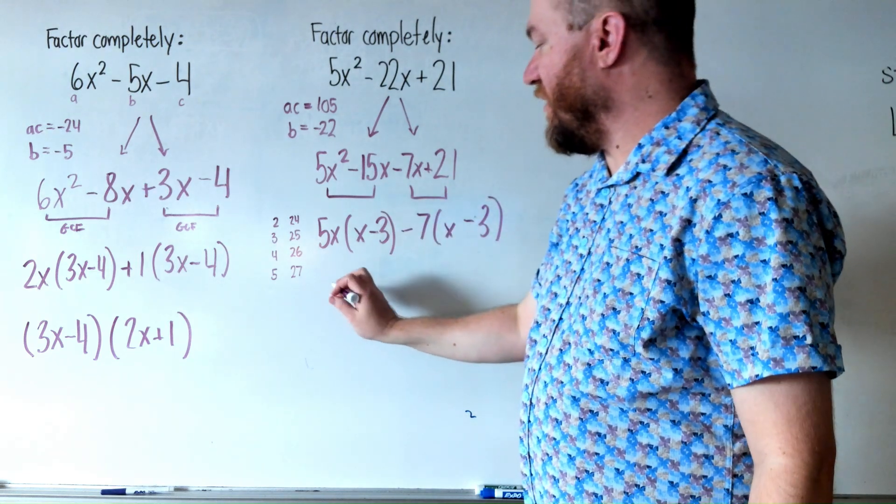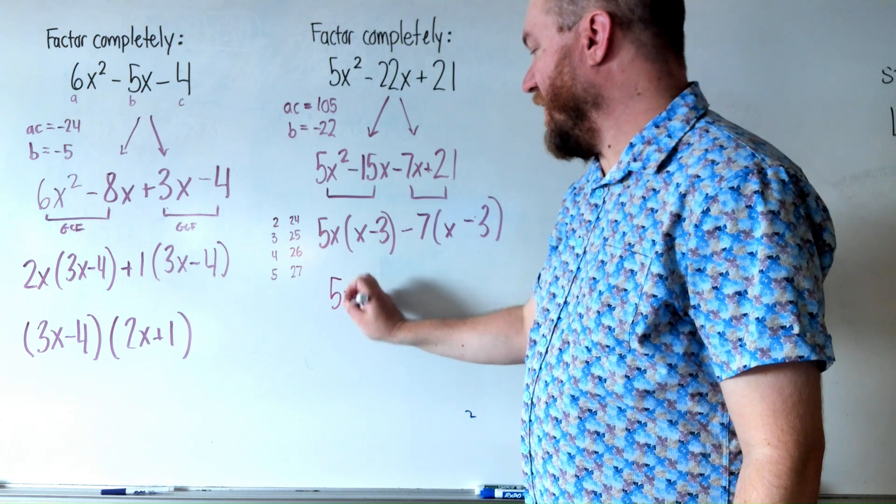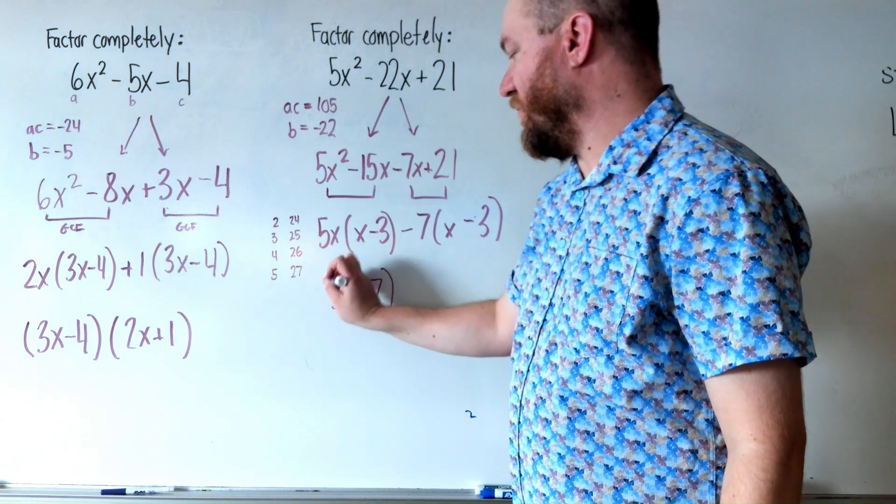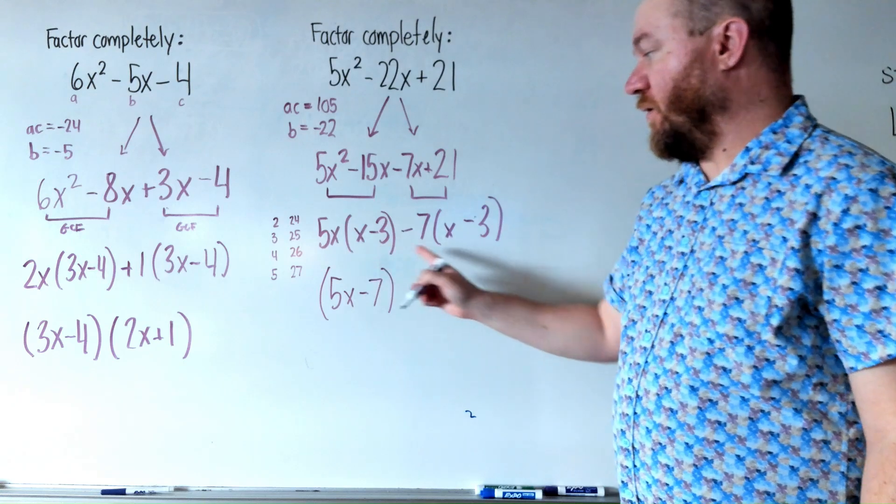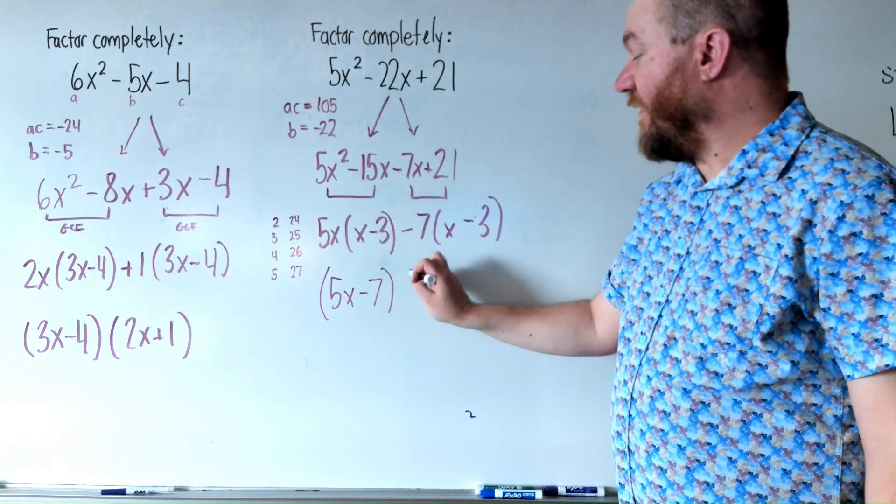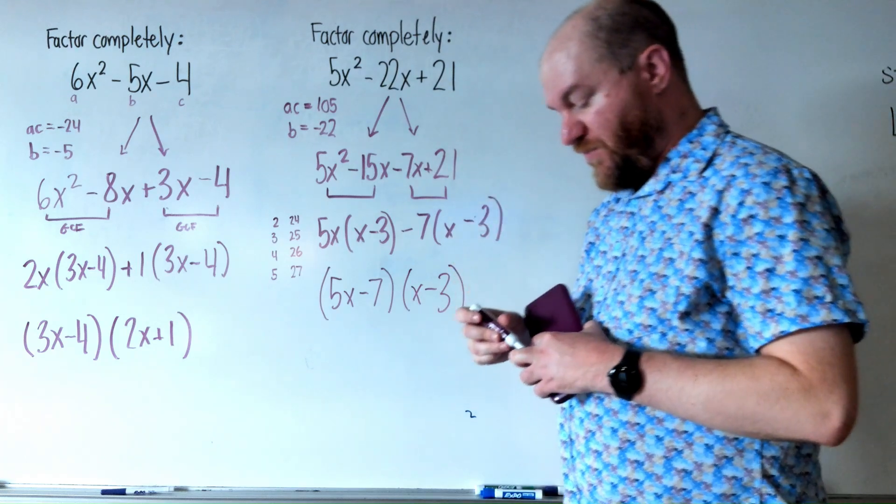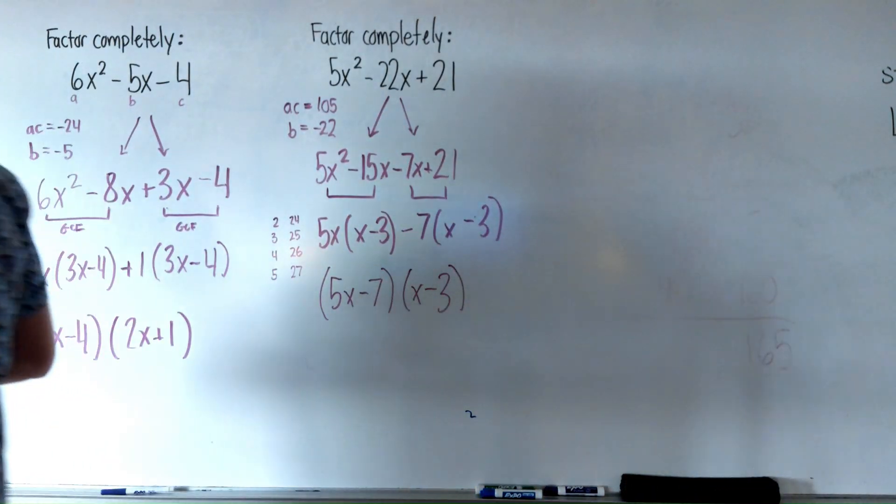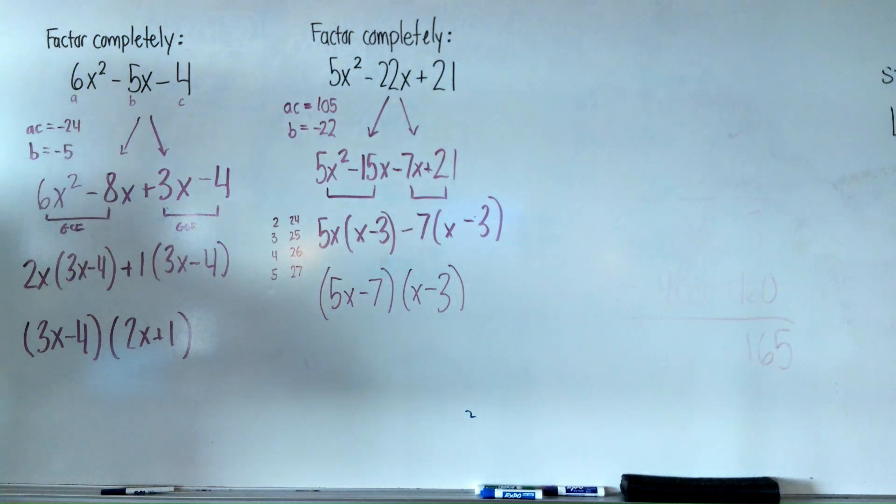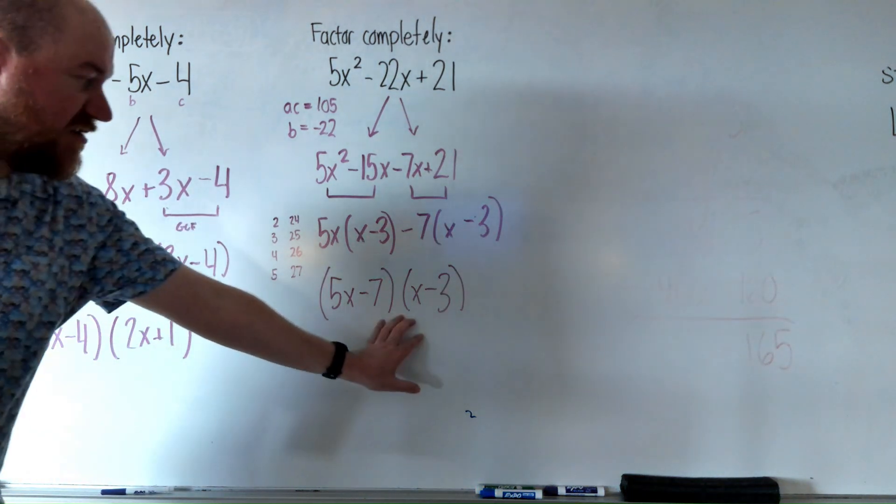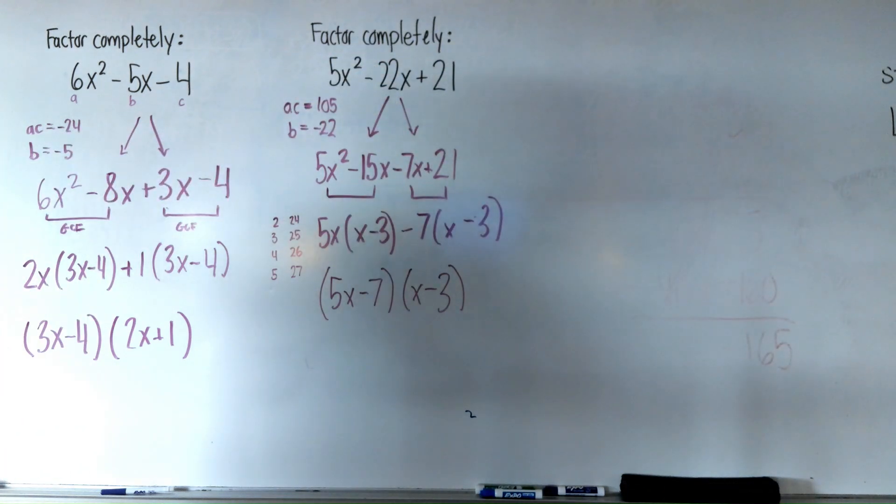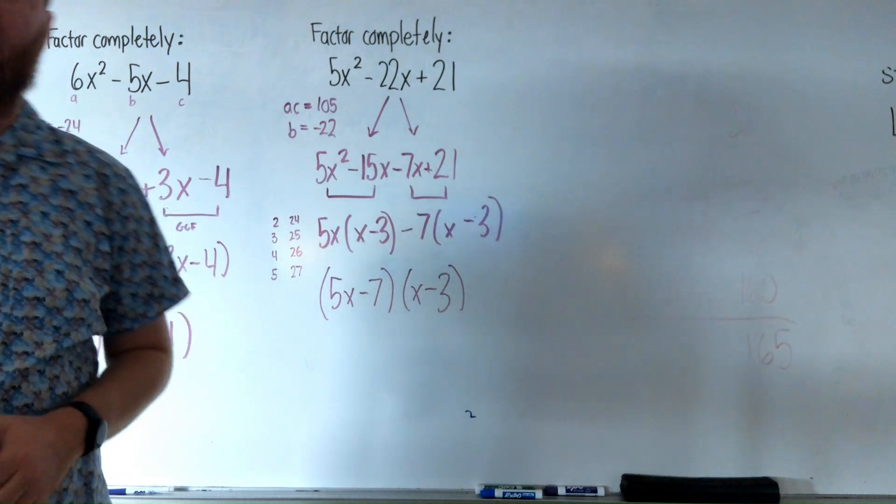And then remember, your answer is the stuff in front of the parentheses goes in its own parentheses. And the two parentheses are the same, that's the other parentheses of this question. So factoring completely, those two factors, (5x - 7) and (x - 3), if we were to multiply those, we would get our original answer, 5x² - 22x + 21.